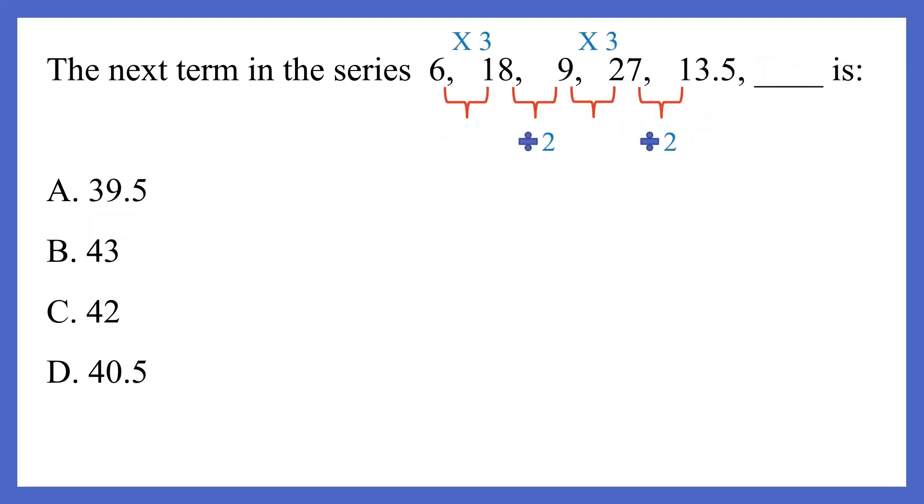The last question for this video, as you can see, the series here is a bit different than the other questions that we just saw. The numbers here are 6, 18, 9, 27, and 13.5. So as we did for the previous sums, we have to find a pattern between the numbers. So look at the first two digits, 6 and 18. We know that 6 into 3 is equal to 18.